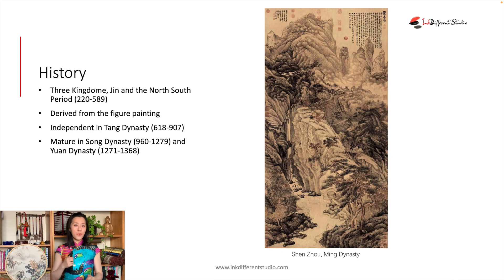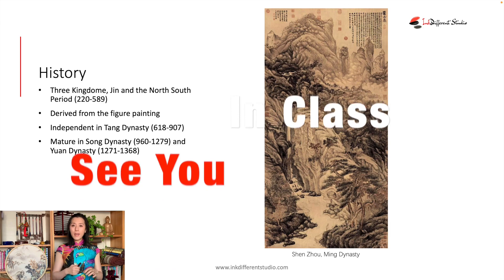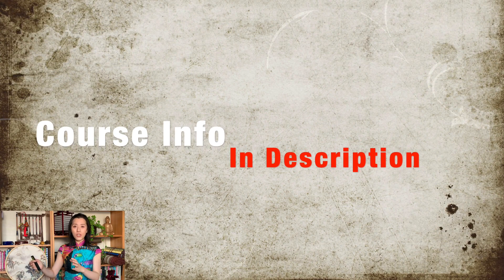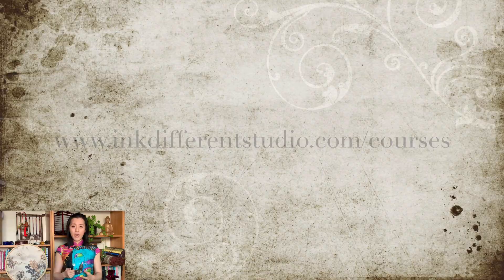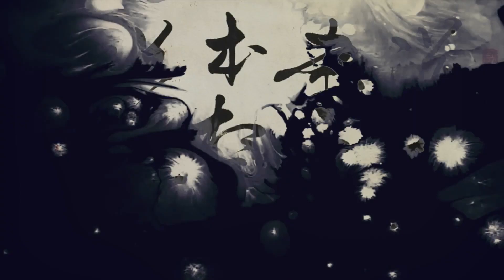The Song and Yuan dynasties had the most amazing landscape painters. Following the Yuan dynasty, we have the Ming and Qing dynasties — especially in the Ming dynasty, everything continued and the glory continued until the very end of imperial China. For more information, check us out at www.inkdifferentstudio.com.